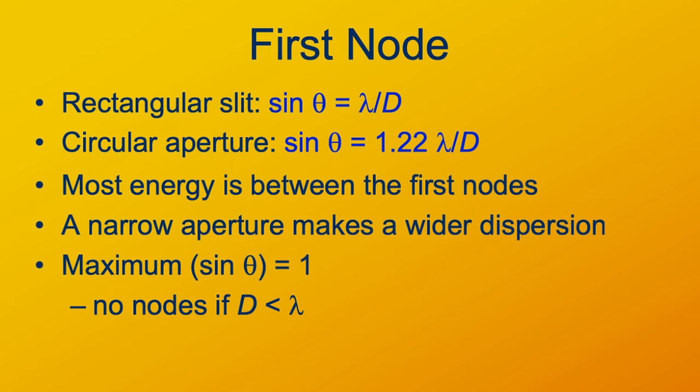Most of the energy of the wave is between the first nodes, so that would be the first node on the left and the first node on the right. If you have a narrow aperture, in other words the slit width is small compared to the wavelength, then you're going to get a wider dispersion, down to the limit where if the wavelength is the slit width or larger, the slit is essentially going to act like a point source of the wave and the waves coming out are going to be a semicircular front and you won't have any nodes or anything like that.